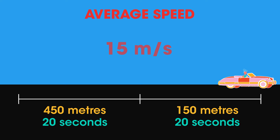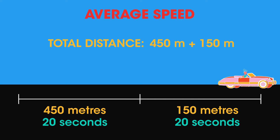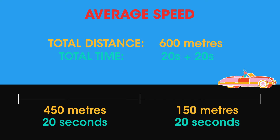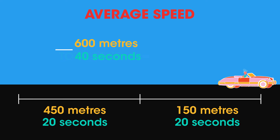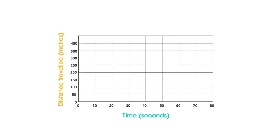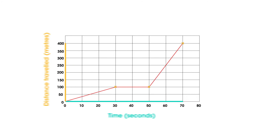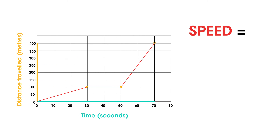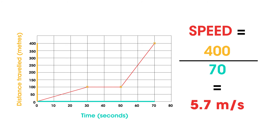Calculations such as these can also be taken from a distance-time graph such as this one. To calculate the average speed, our method remains exactly the same — we calculate it by taking the total time and total distance traveled from the graph. This means that on this graph the average speed will be 400 meters divided by 70 seconds, giving us 5.7 meters per second.